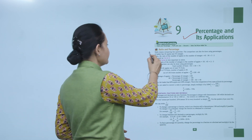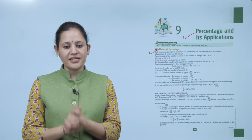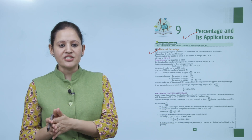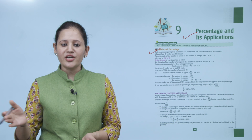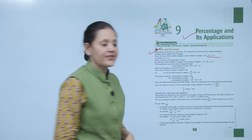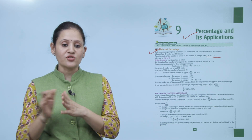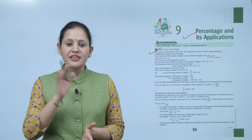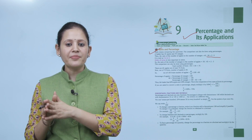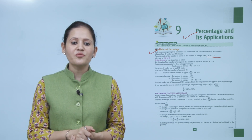First is ratio and percentage. Ratio means comparing two quantities. The comparison can also be done using percentage. For example, a basket has 45 apples and 30 oranges. The ratio of apples to oranges is 45:30, which in simplest form is 3:2. Note that the order of terms is very important — 3:2 is not the same as 2:3.